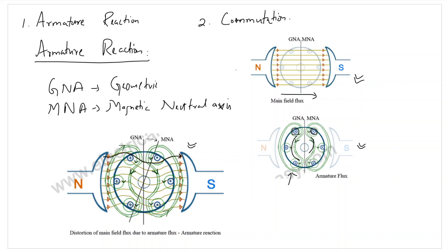Because the magnetic neutral axis gets shifted, we need to make sure that initially the brushes are placed along the geometrical neutral axis, but as the magnetic neutral axis gets shifted we need to place the brushes along the magnetic neutral axis as well — otherwise sparking will occur. Knowing the exact position of the magnetic neutral axis is not always possible, so we need some mechanism to reduce the effect of armature reaction such that the magnetic neutral axis does not get shifted from the geometrical neutral axis.